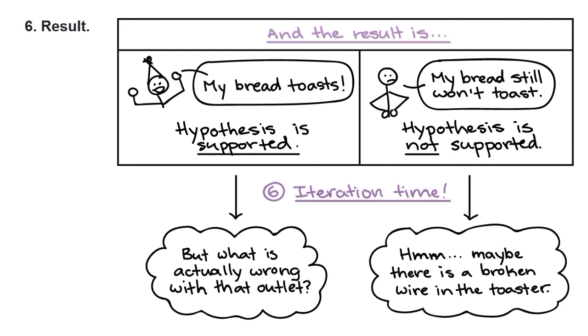What is actually wrong with that outlet? And in this case, maybe there is a broken wire in the toaster. So it says that if the bread has toasted here, which means there is some problem with the outlet. And if the bread is not toasted, which means there is a problem with the toaster itself.